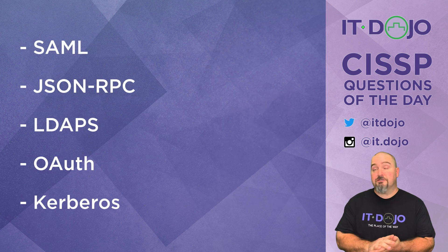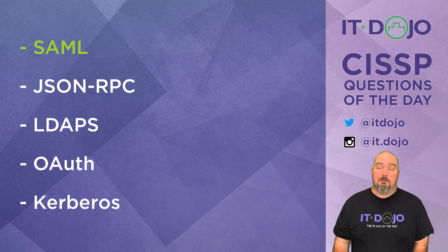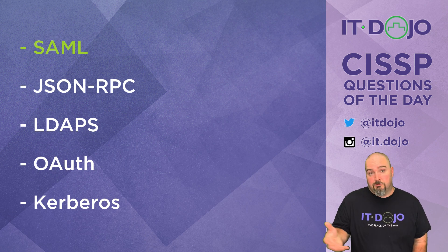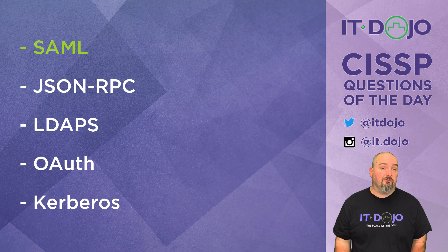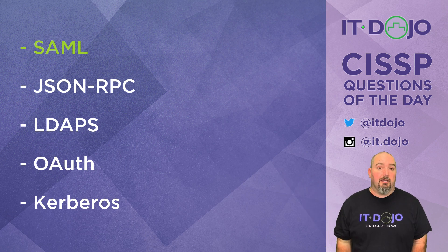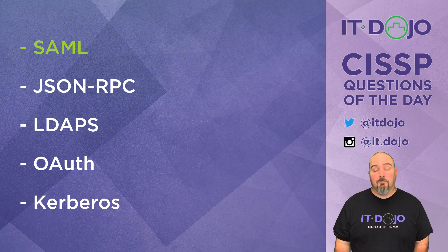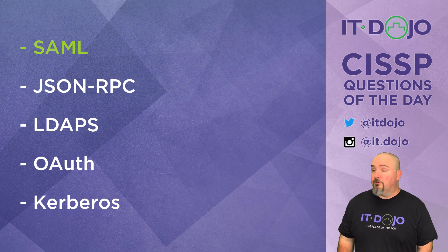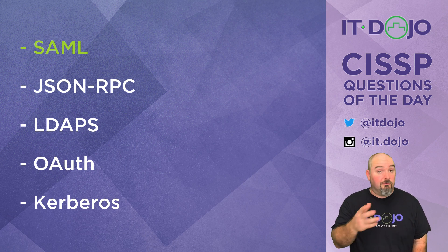Choice number one is your best choice: the Security Assertion Markup Language — SAML. SAML allows you to have an identity provider, which in this case would be your local directory, such as Active Directory, and then you have the service provider, which is the third-party app you want to access. As long as those service providers support it and you're using federated services for your Active Directory deployment, your users can authenticate to those third-party apps using SAML.